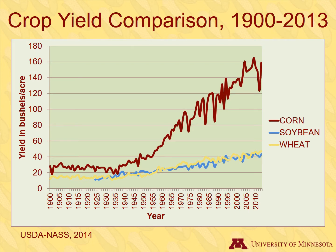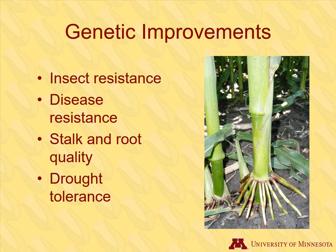Other crops have not shown the same dramatic yield increases that corn has. Here are the yield increases over time for two other major crops, soybean and wheat. All three crops have shown increased yields since 1900, but corn has definitely seen the largest increase. Much, but not all, of this increase in yield can be traced back to hybrid technology. Corn breeders also improve traits such as resistance to disease and insects, stock and root quality, and tolerance to drought.